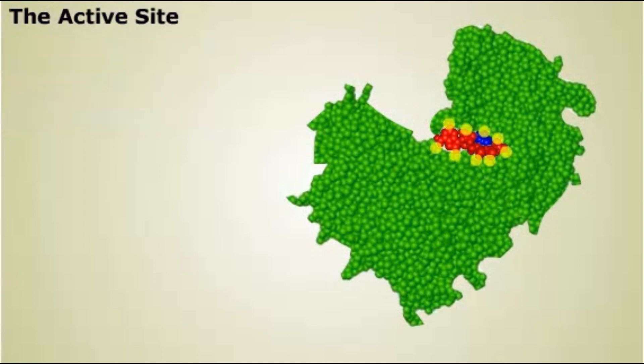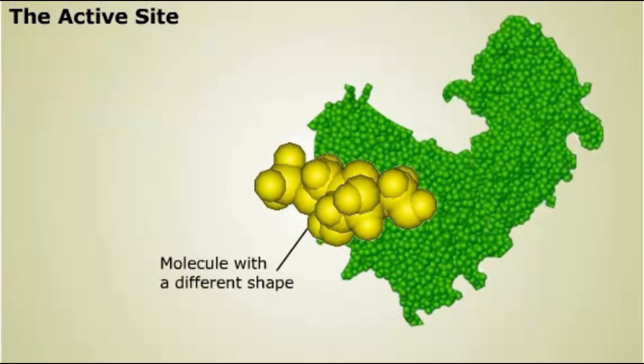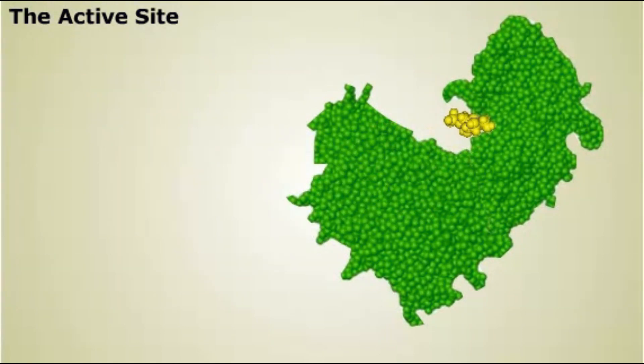The many points of contact between the enzyme and its substrate also ensure specificity. Molecules with slightly different shapes won't fit into the active site as well as the substrate. This reduces the ability of the substrate to interact with the enzyme and the activation energy remains high.